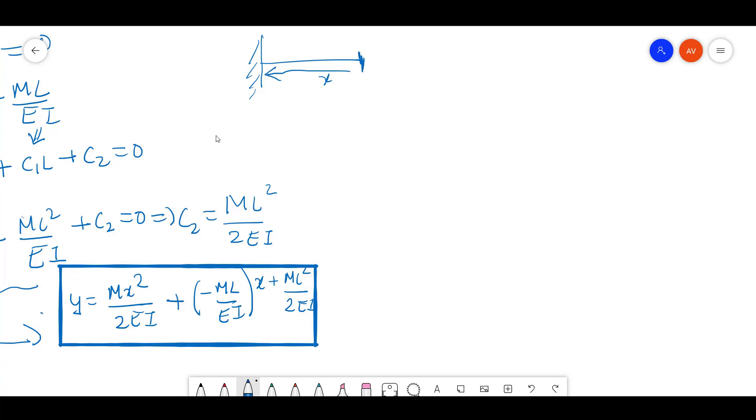For the cantilever beam, at the free end where x equals zero, when you substitute x equals zero, your first two terms will become zero. That means your y equals ML²/2EI. So this is the formula that I mentioned earlier.